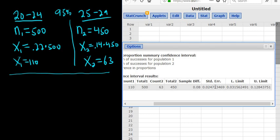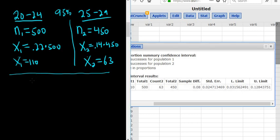So the lower limit is 0.03156. And the upper limit is 0.12844, just rounding to a couple decimal places. It's always lower and upper for confidence intervals.